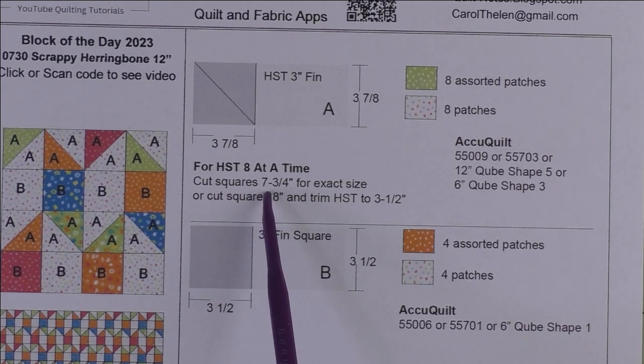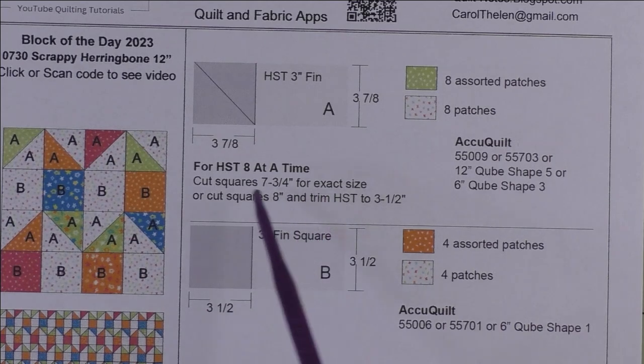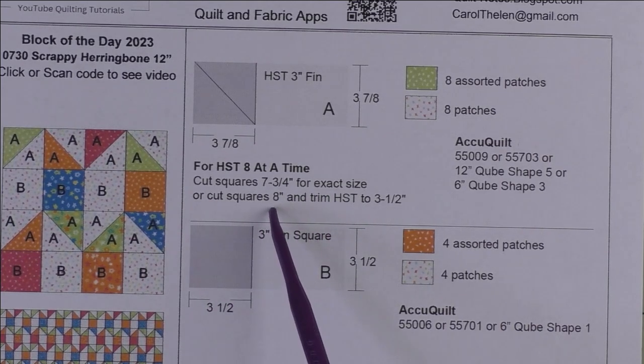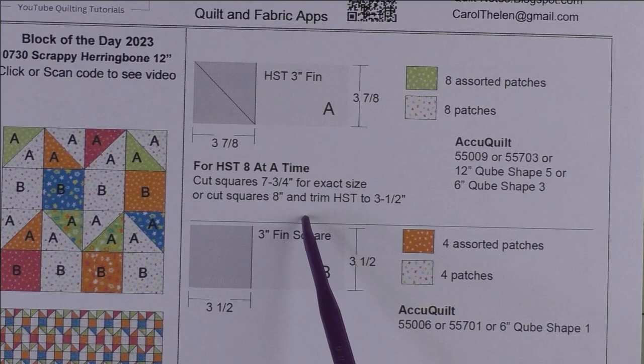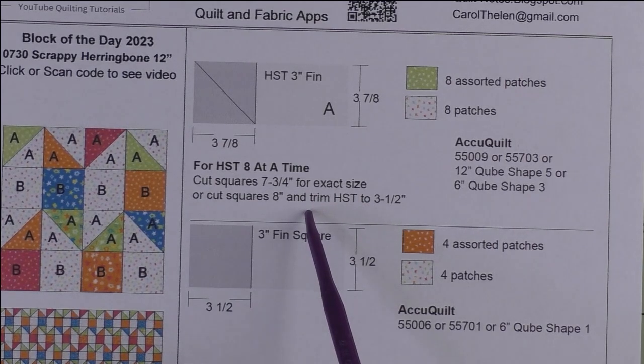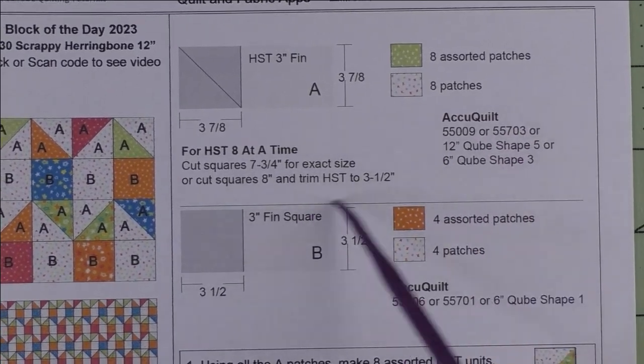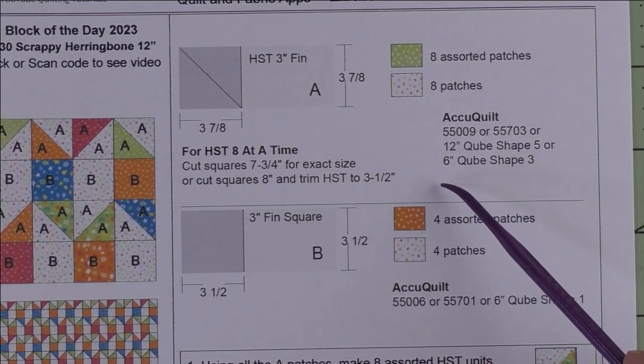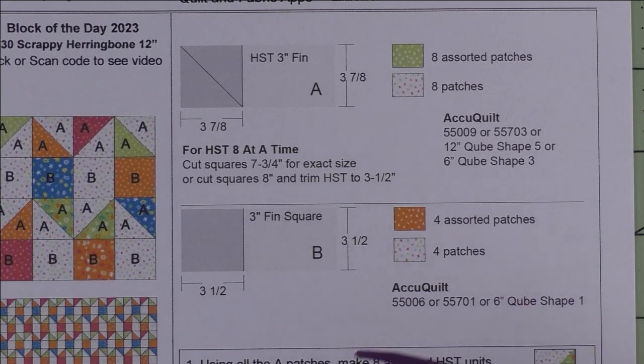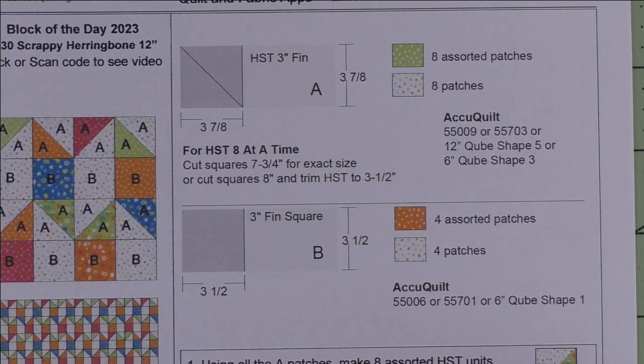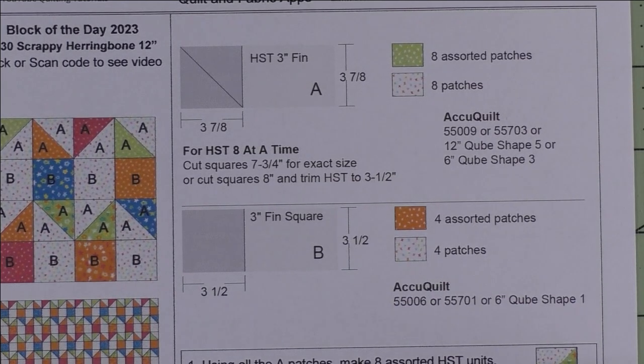Cut squares at seven and three quarter inches for the exact size, or cut squares eight inches and trim your final half square triangles to three and a half inches. Of course if you're using AccuQuilt you are doing patches. For this video I cut patches so I can have an assortment and make it more scrappy.